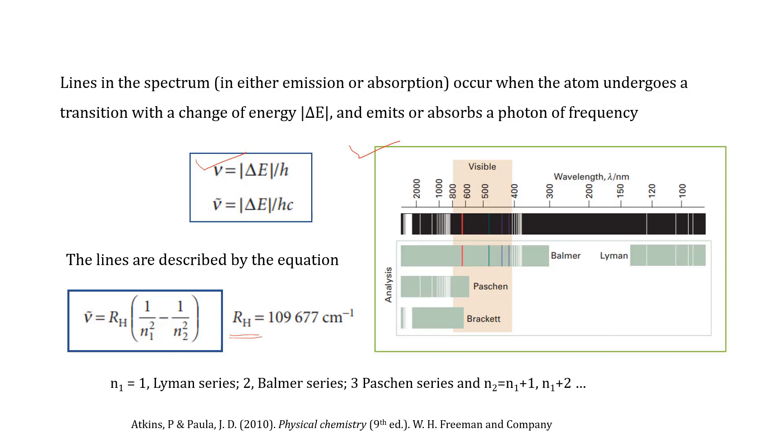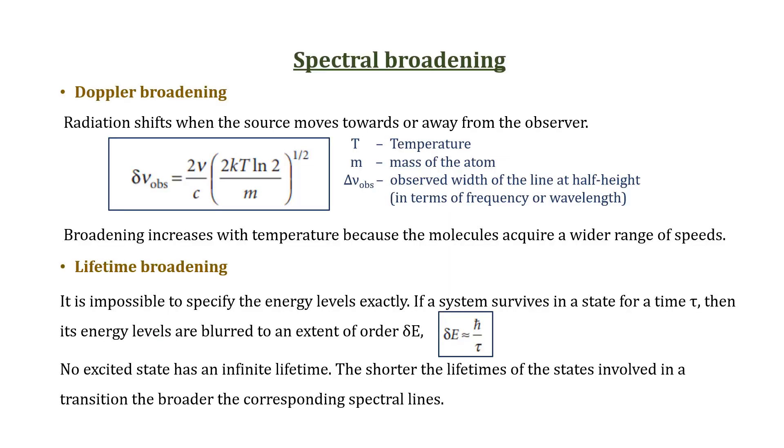The spectra are affected by a number of factors which causes the broadening of the spectra, and one of the main reasons behind it is Doppler broadening, which is defined as the shifting radiation when the source moves towards or away from the observer.